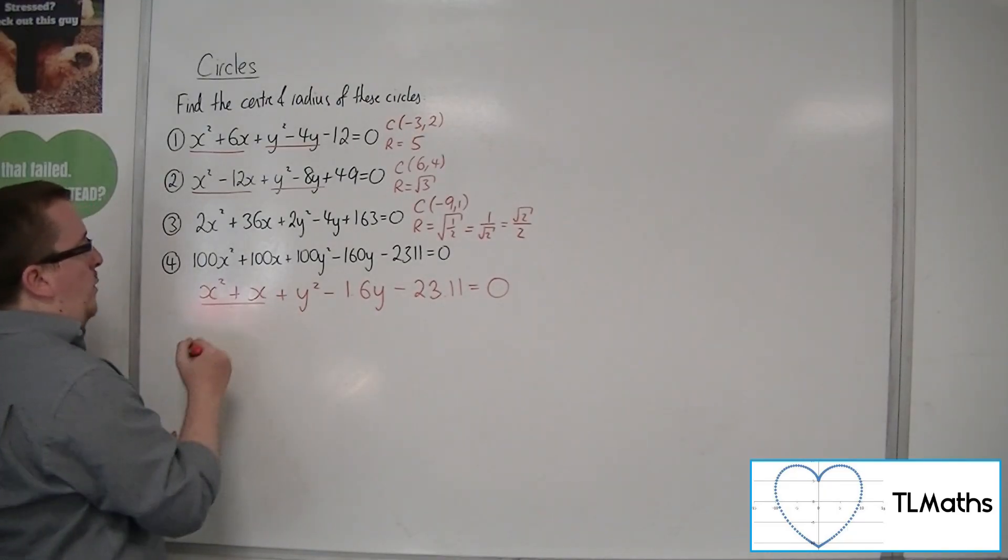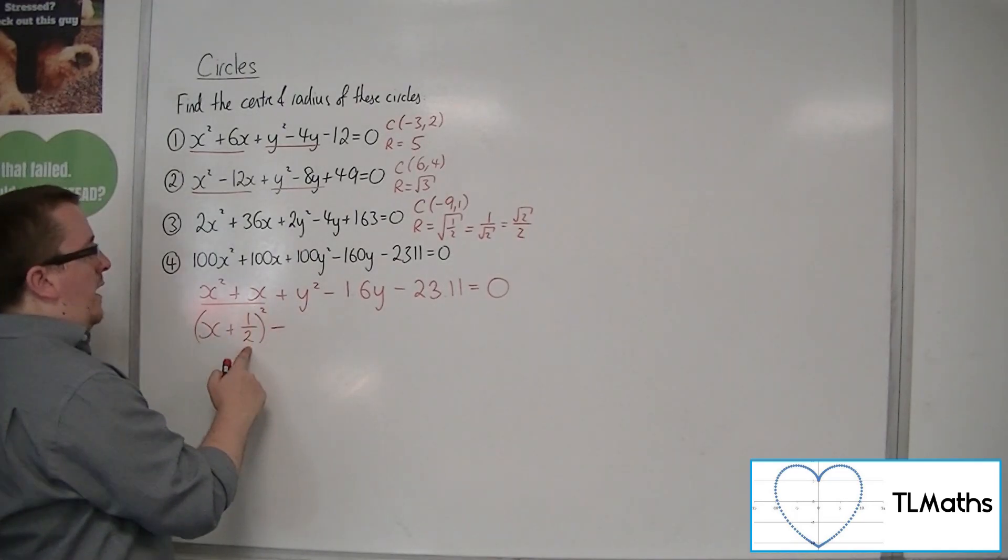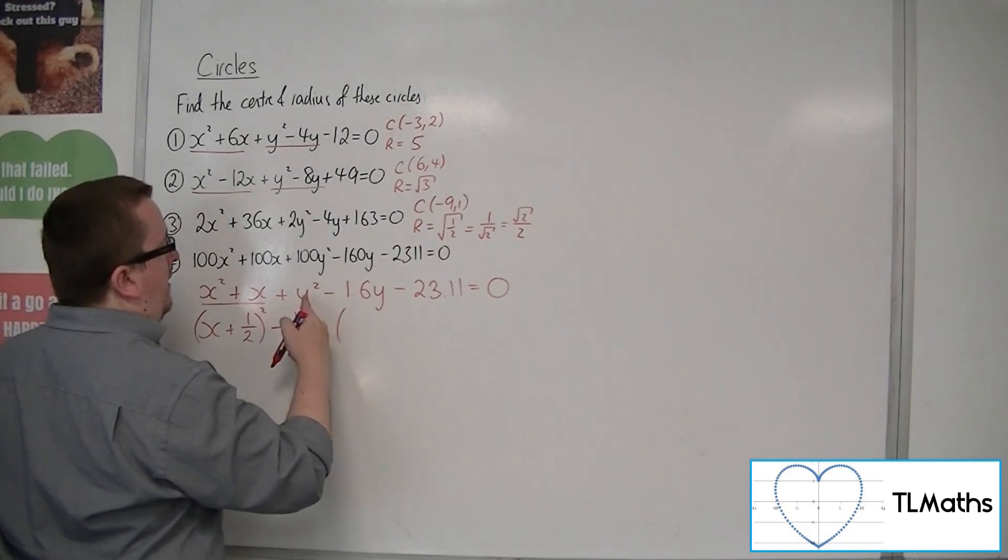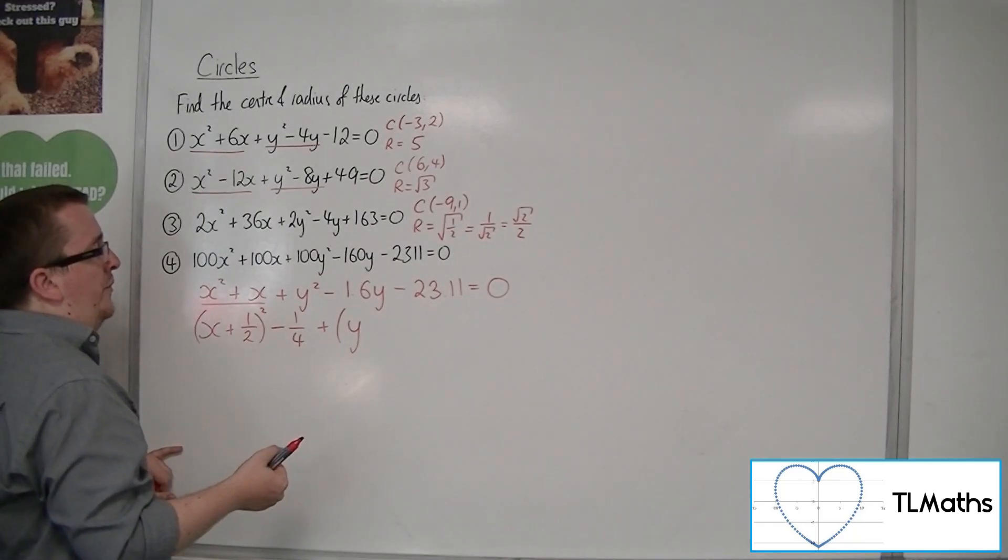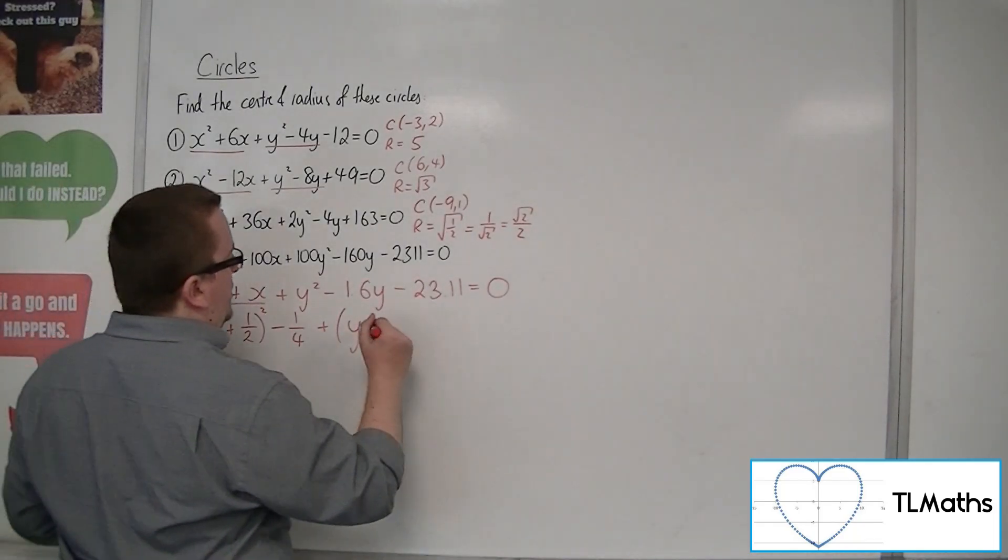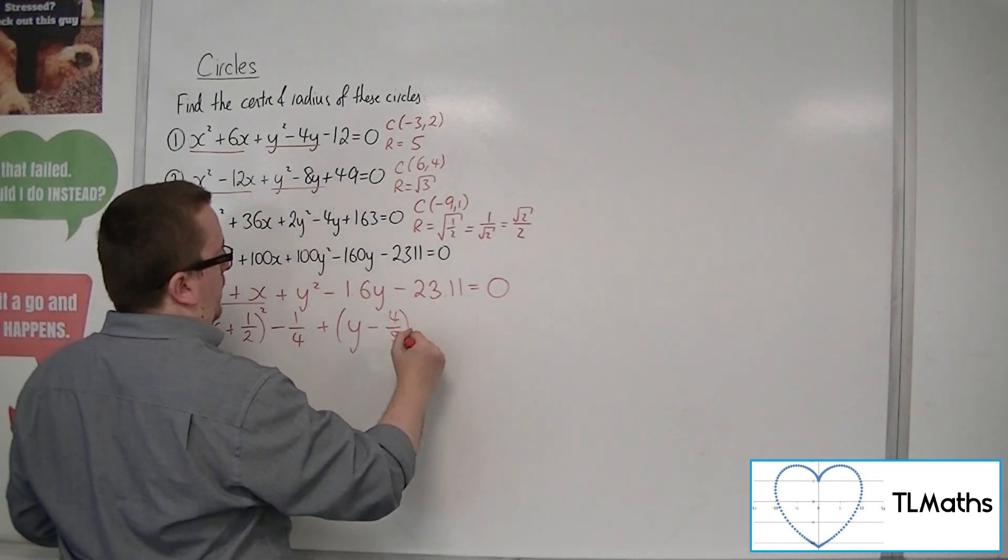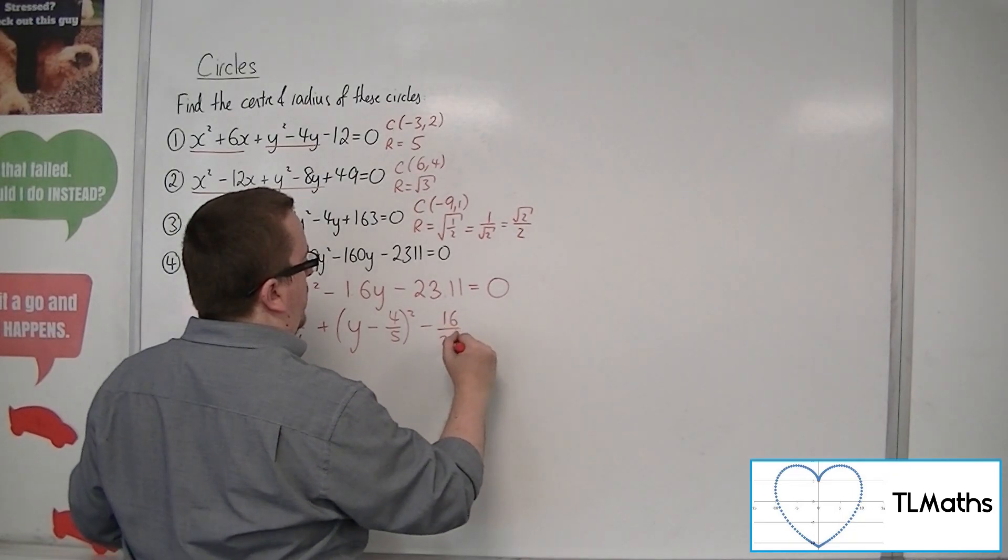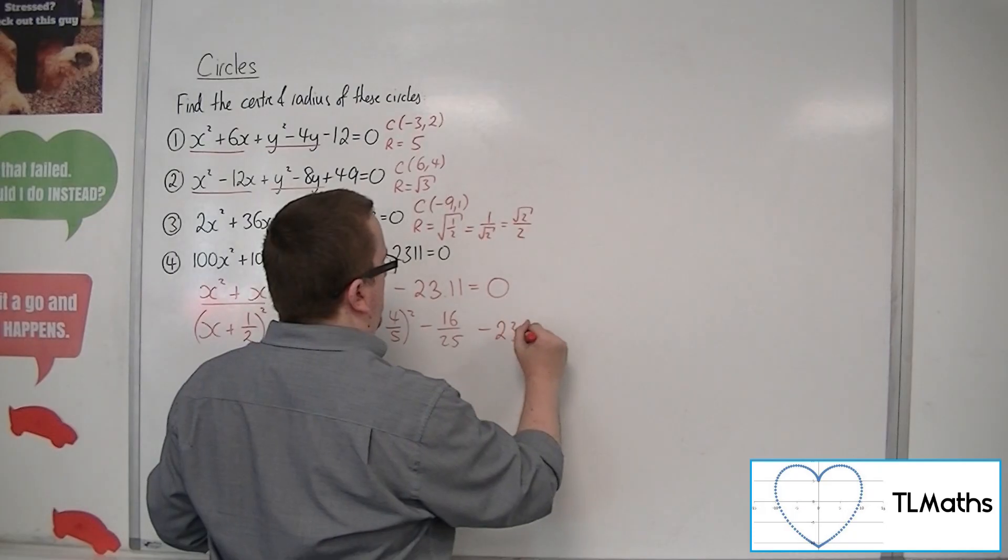Completing the square on the x squared plus x part, I get x plus 1 half squared, take away a half squared, so take away a quarter. Then here we're going to have y, half of 1.6 is 0.8, so take away 0.8, so 4 fifths squared, take away 16 over 25, the square of the 4 fifths. And I've got that take away 23.11.